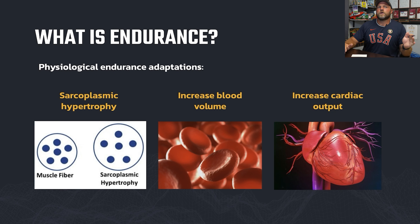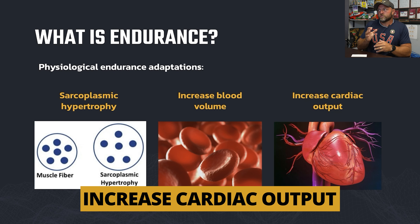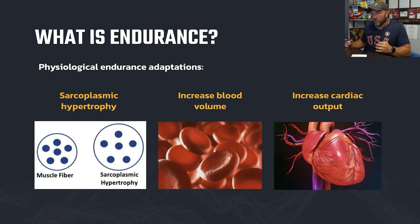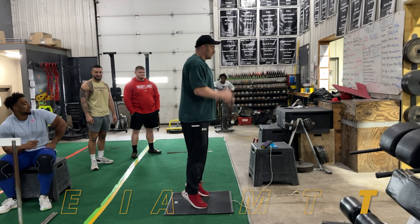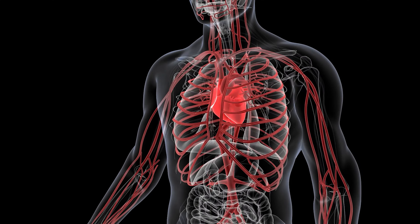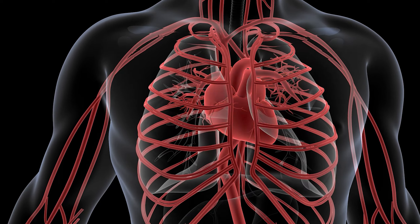After sarcoplasmic hypertrophy and increasing blood volume, the third adaptation is increasing cardiac output. If we have an athlete and we're trying to figure out specifics around endurance, we can look at how to increase cardiac output — similar in my mind to improving an athlete's vertical jump by making them more explosive. This adaptation to the heart is like having greater power output. If we can increase the cardiac output of the heart, it can pump more blood in a given time, deliver more oxygen, and when combined with increased blood volume, we're going to see some pretty big impacts.